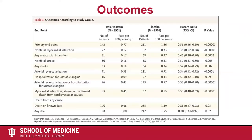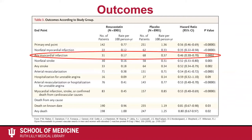Now let's look at the numbers in the Jupiter study, specifically the outcomes table. As you see, the study looked at many outcomes. However, the New York Times article quote focused on heart attack reduction, so we will only look at that outcome.